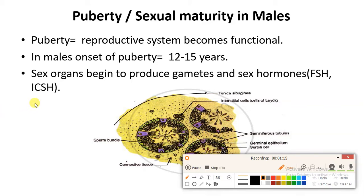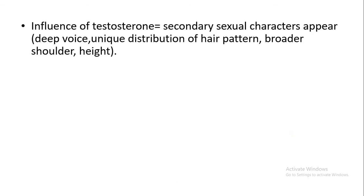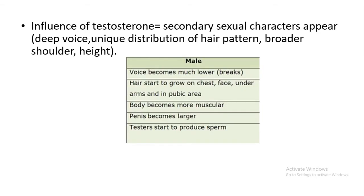The other hormone is ICSH. ICSH is the full form of interstitial cell stimulating hormone. ICSH stimulates the interstitial cells, which produce the hormone testosterone, which is responsible for secondary sexual characters. Secondary sexual characters in males include deep voice, Adam's apple, different distribution of hair patterns such as beard, mustache, hair on the chest region, broader shoulders, and increase in height.